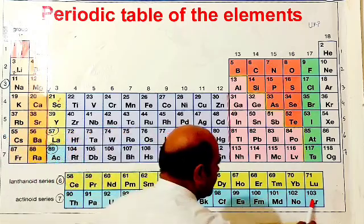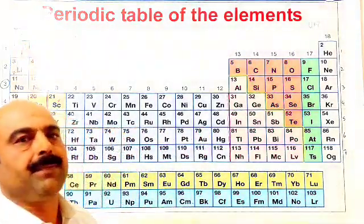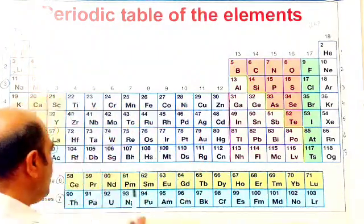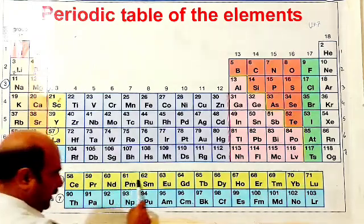Similarly period number 7 these are total 18 elements and include these elements, these are 14. 18 plus 14 these are also total 32 elements.